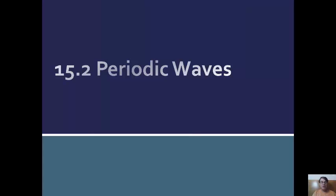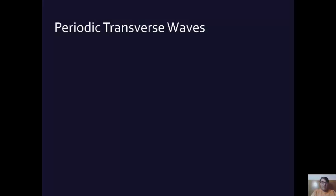So the second section of Young and Friedman's University Physics, Chapter 15 on Mechanical Waves, goes into periodic waves a little bit more detailed. Still a very easy section. It's the third section where the math goes a little bit to the high end, but this is still pretty easy. We're talking about two basic kinds of periodic waves, the transverse and the longitudinal waves in this section.